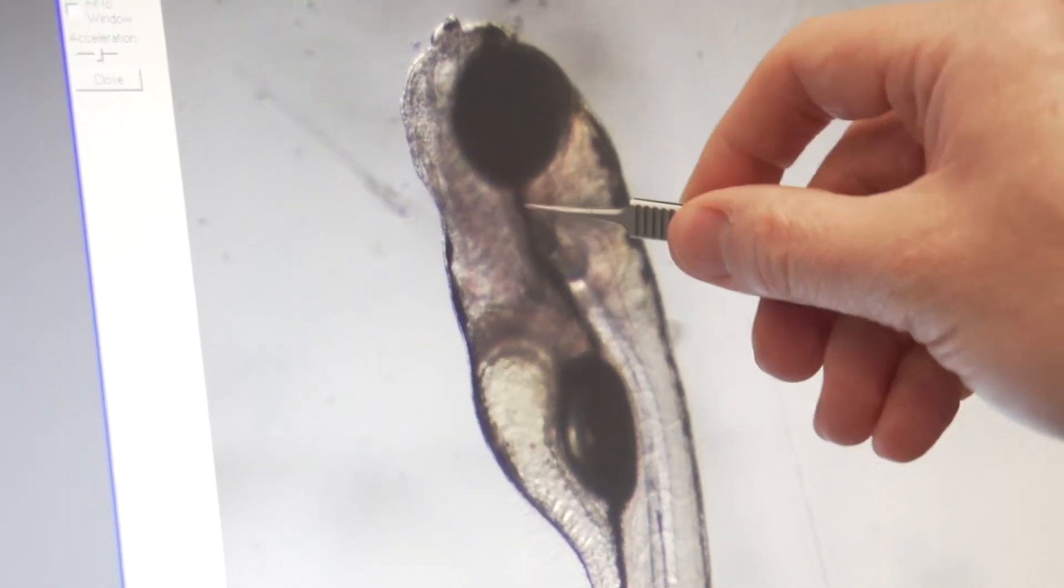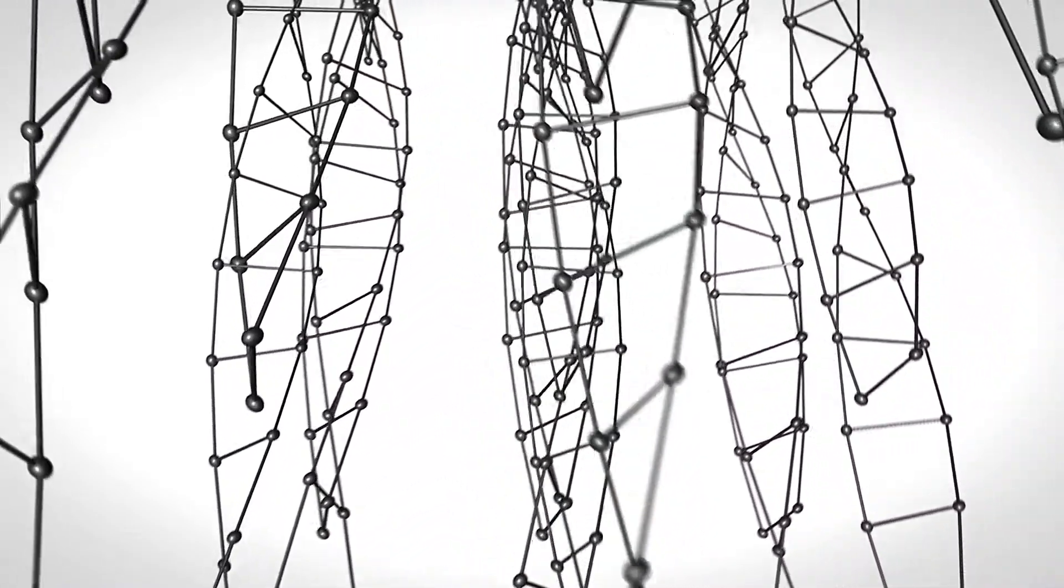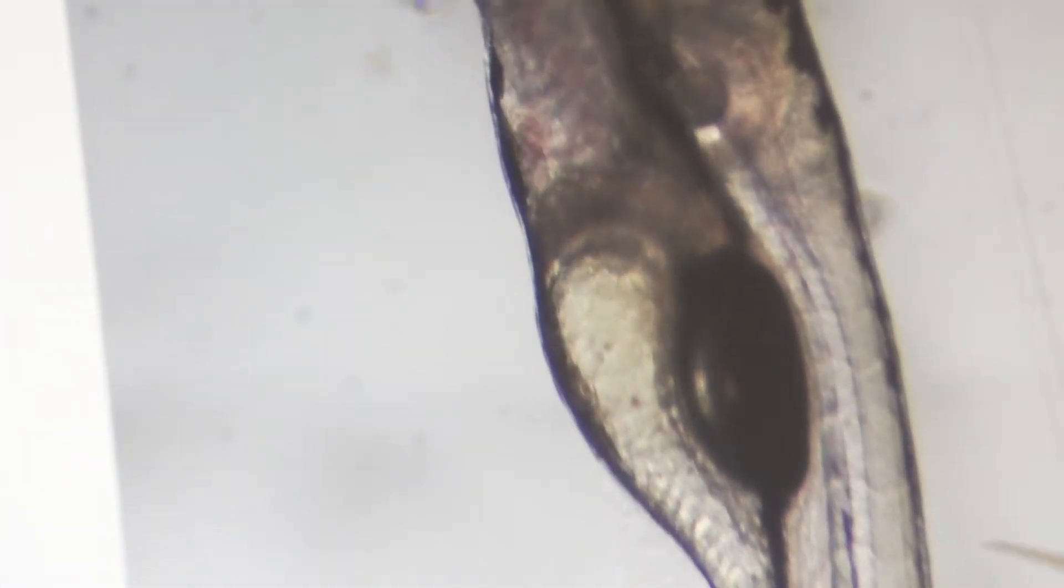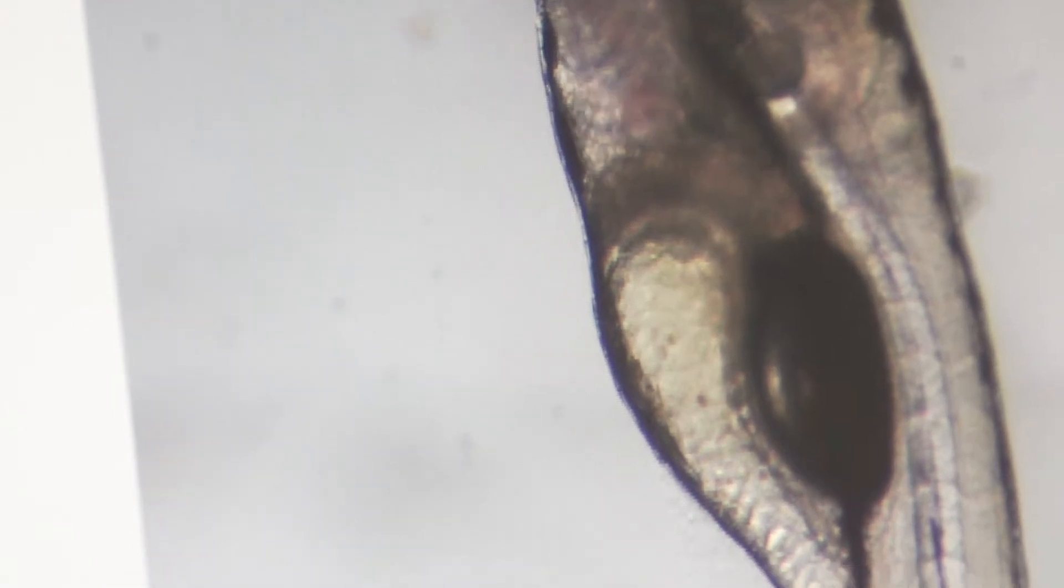Genetics of the zebrafish is very comparable to human development. We have about 70-80% similarity in the genetics of development. A lot of the pathways and genes involved in development are shared between fish and humans.